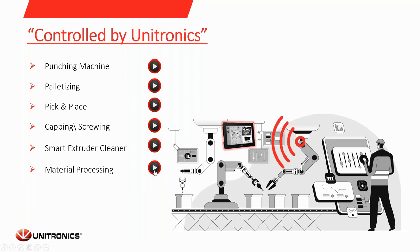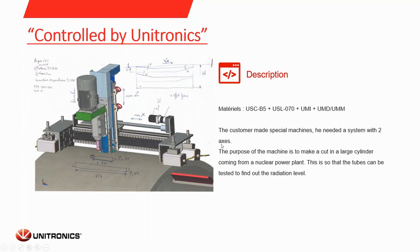Another application — not a video, but worth sharing — is a customer in France who built a machine with three axes: two servos and a VFD. The machine does milling on cylinders coming from a nuclear plant to measure radiation levels and confirm that nuclear plant procedures are correct. The customer puts the system on the cylinder with magnets, and it has two vertical servo axes to determine the cut position, plus a VFD to run an AC motor as the spindle.